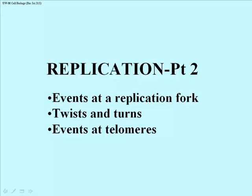Hello! In an earlier module, we saw that replication is catalyzed by a template-dependent DNA polymerase, and that it begins when the double helix unwinds at an origin of replication. We also saw that replication is semi-conservative, and that unwinding and new DNA strand synthesis occurs in both directions away from the origin of replication at two replication forks. In this module, we continue our discussion of replication with attention to the molecular events at the replication fork, the resulting stress on DNA, how this stress is relieved, and the special replication of the ends of chromosomes.